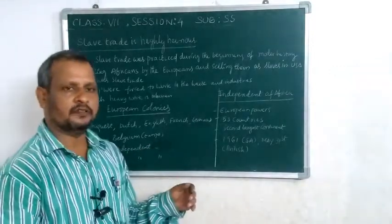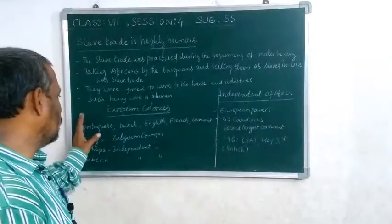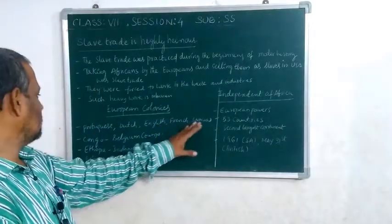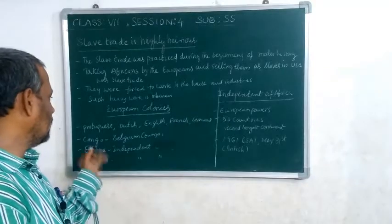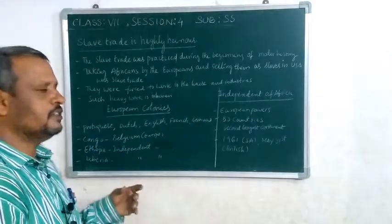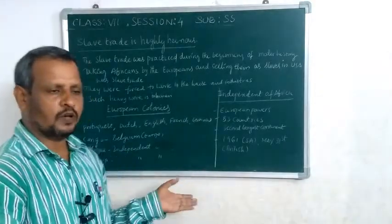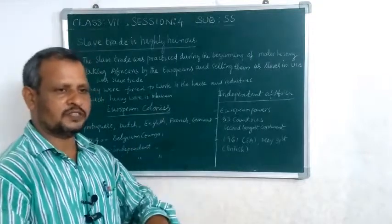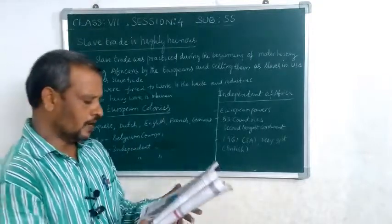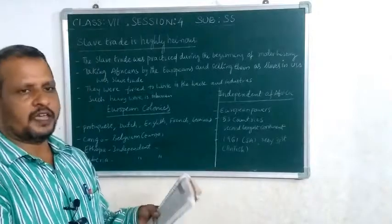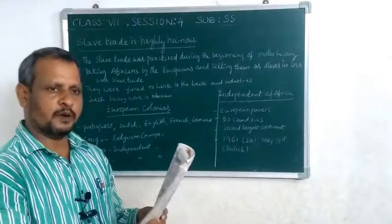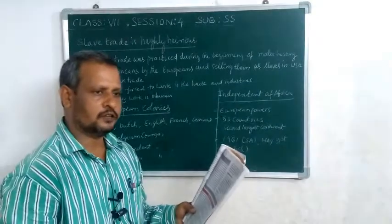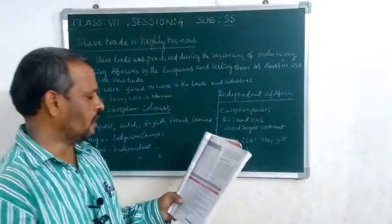Remaining countries were colonized by Europeans — like Portuguese, Dutch, English, French, and Germans. Which colony was Congo? Belgium colony. Whose colony was India? British. Whose colony was Australia? British. They came for trade purposes, occupied and halted at the ports of Africa, then colonized and ruled over Africa.